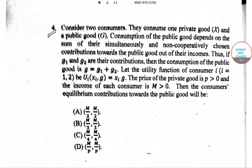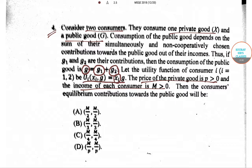See question number 4. It is given that there are two consumers. They consume one private good X and a public good G. If G1 is the total contribution of the first consumer to the public good and G2 is the total contribution of the second individual, then G is the total amount of the public good being supplied in the economy. The utility function of the i-th individual is given as Xi into G. The price of the private good is P, which is more than 0, and the income of each consumer is M, more than 0.